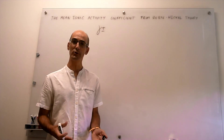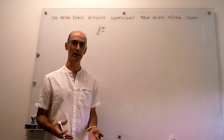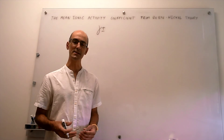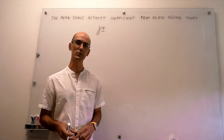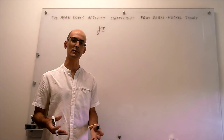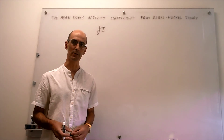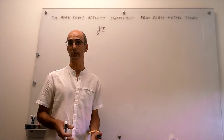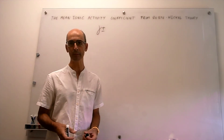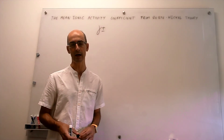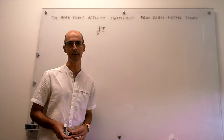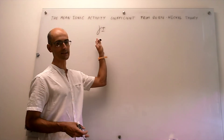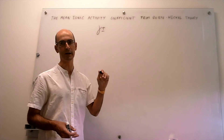We're not going to see how the equation is derived in full. Instead, we're simply going to see what the main approximations of the theory are, and then carry out a numerical example to see how this Debye-Hückel theory can be applied to calculate this γ±.